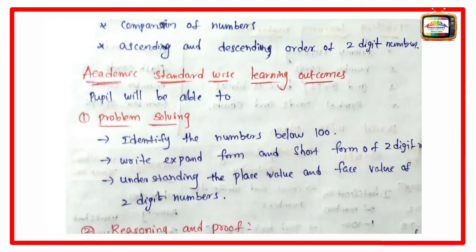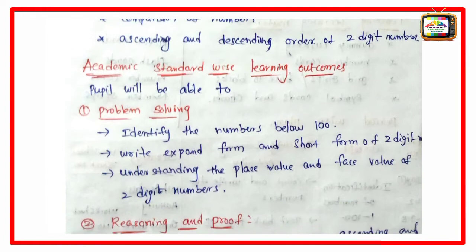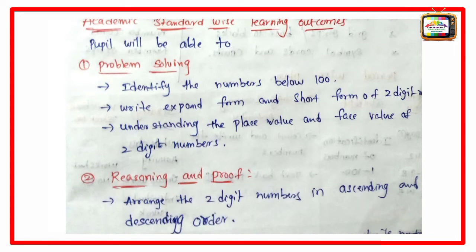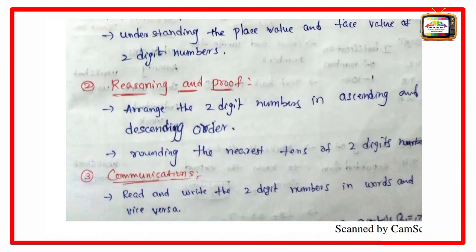Academic standard-wise learning outcomes: Problem solving - identifying the numbers below 100, write expanded form and short form of two-digit. Understanding the place value and face value of two-digit numbers. Reasoning and proof - arrange the two-digit numbers in ascending and descending order, rounding the nearest tens of two-digit numbers.